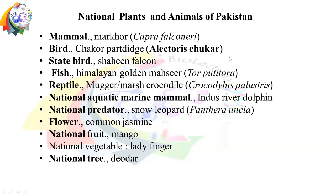I hope you will know all this information for your paper, wildlife test, or interview, as a zoologist or biologist. Quick recap: the national mammal is Markhor, national bird is Chakor Partridge, national fish is Himalayan Golden Mahseer, national reptile is Mugger Crocodile, national aquatic marine mammal is Indus River Dolphin, national predator is Snow Leopard, national flower is Common Jasmine, national fruit is Mango, national vegetable is Ladyfinger, and national tree is Deodar.